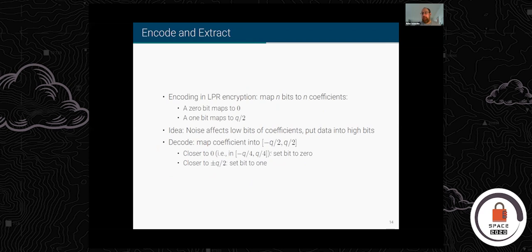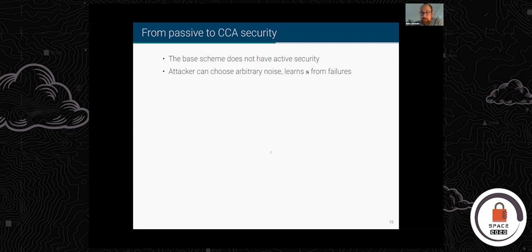Before looking at the design space — what decisions can we make to trade off size, speed, security, and failure probability — let's recognize one problem we still have: what I've described so far is only passively secure. There is a reason for this. If Alice keeps reusing her public key A·s + e, then Bob can send an A·s' + e' where the noise is not chosen according to the noise distribution, but instead chosen so that key encapsulation fails exactly when some bit is set in Alice's secret.